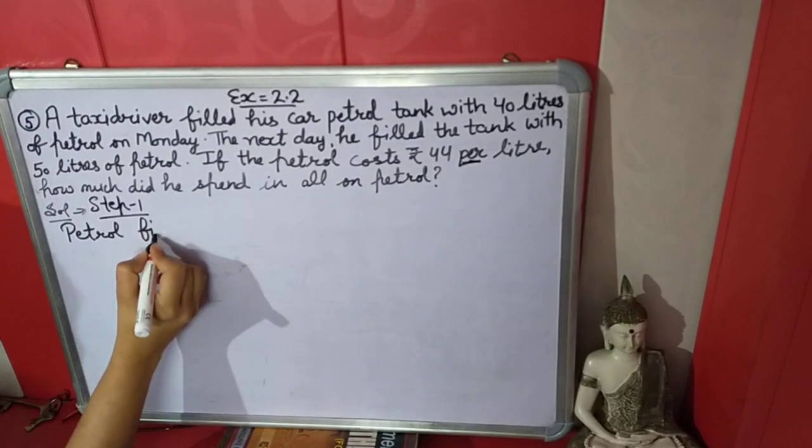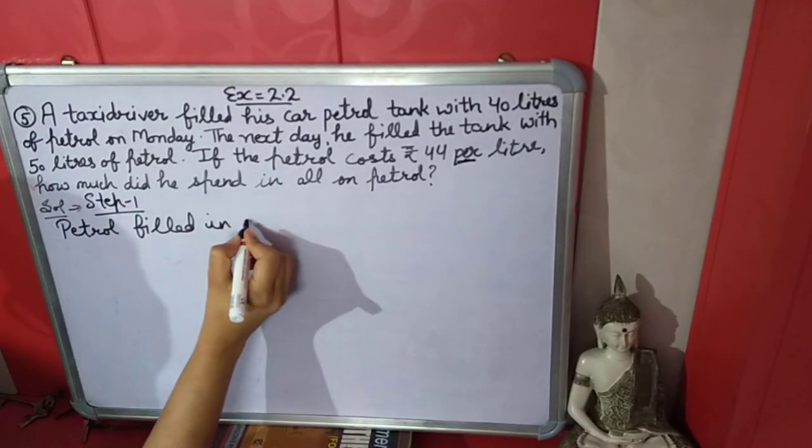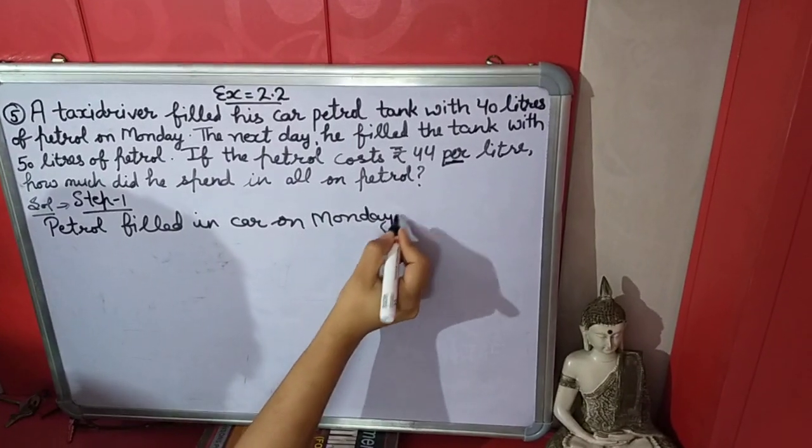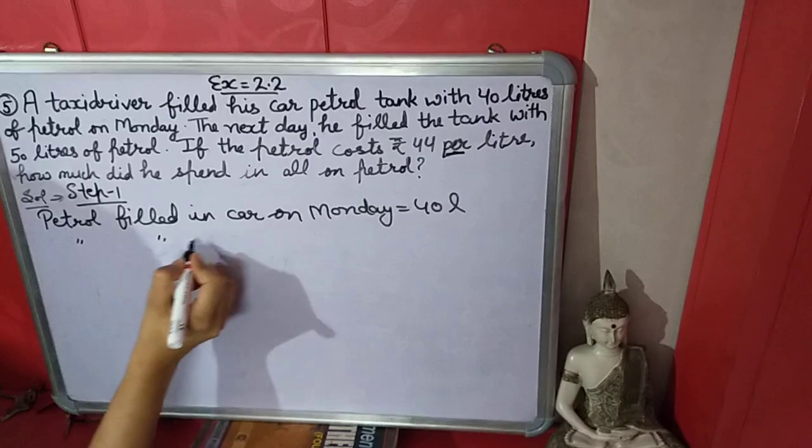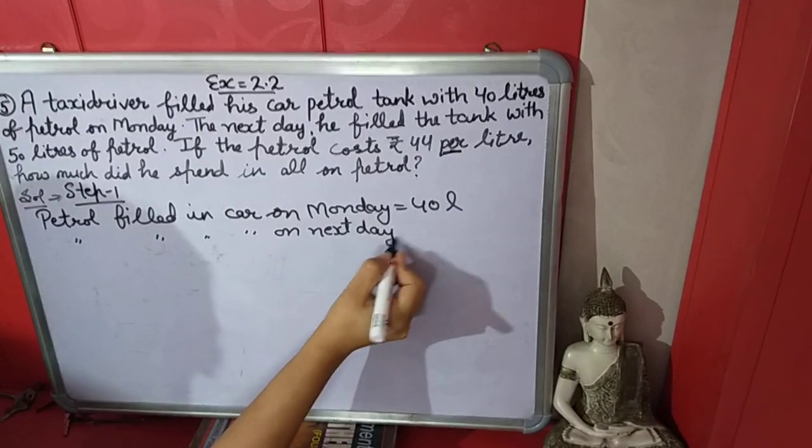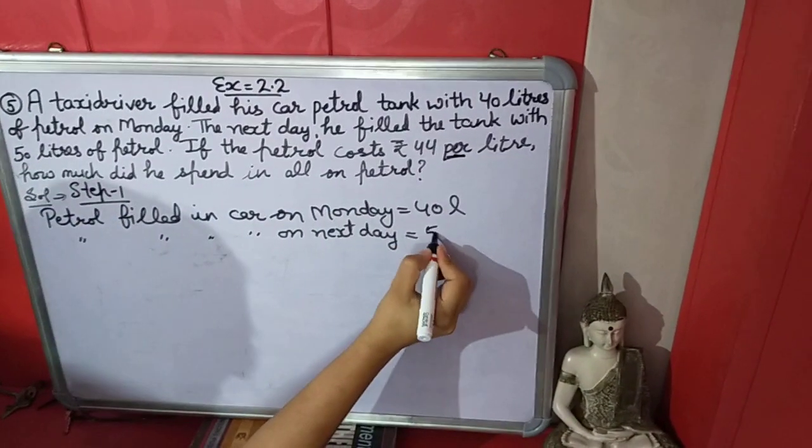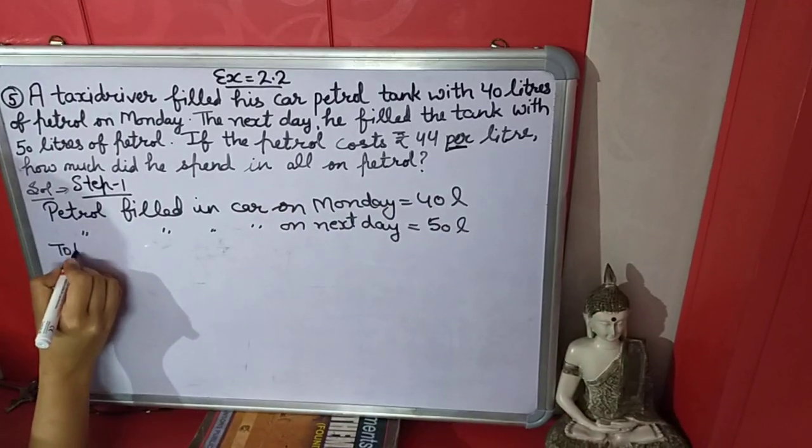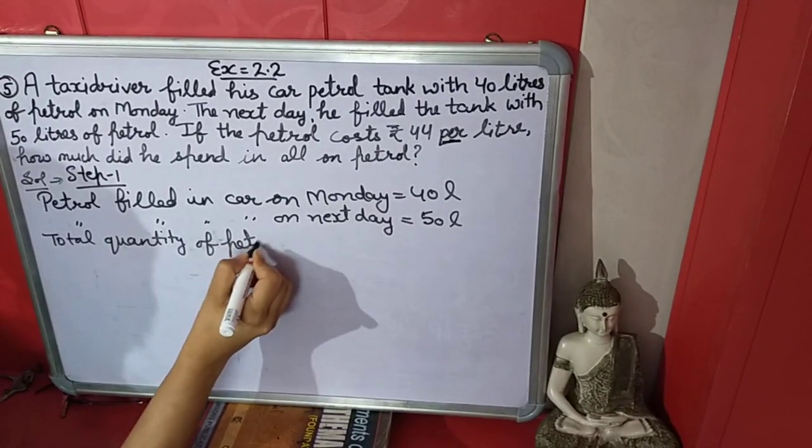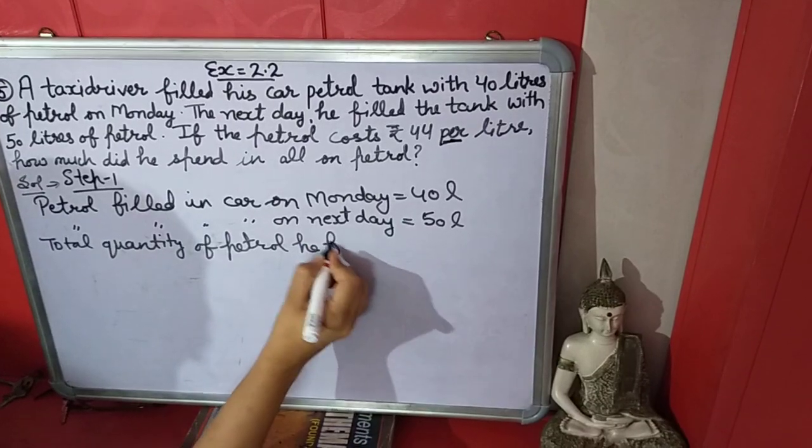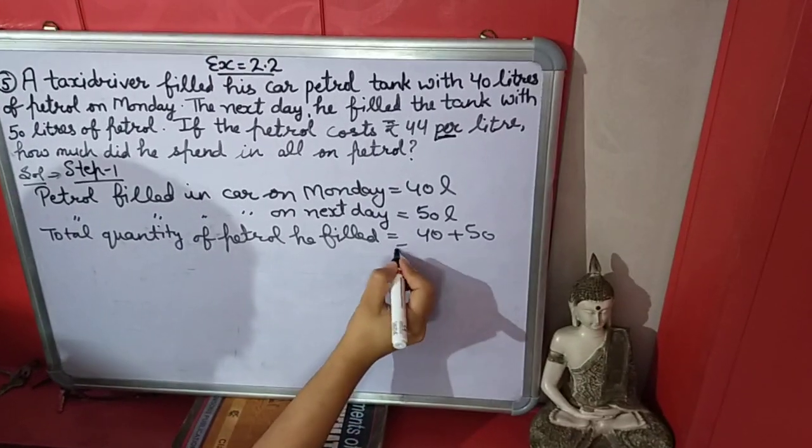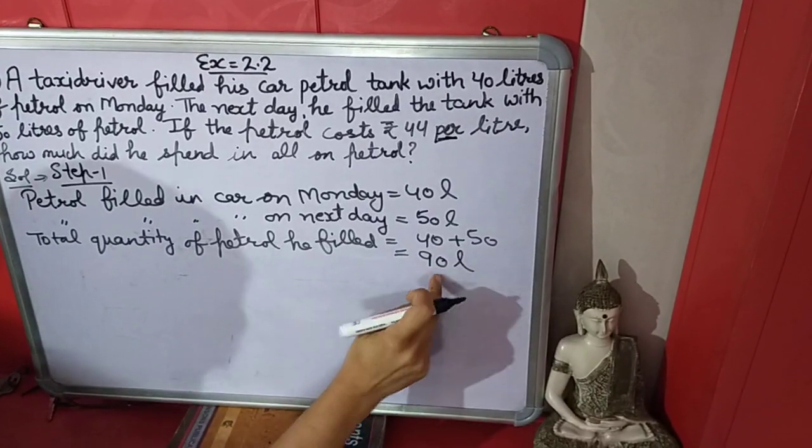Step one. Petrol filled in car on Monday is 40 liters. Petrol filled in car on next day is 50 liters. Total quantity of petrol: 40 plus 50 equals 90 liters. It means he used 90 liters of petrol in two days.